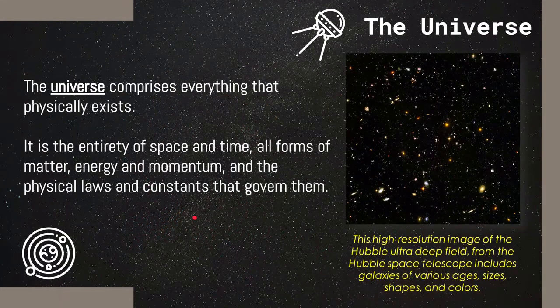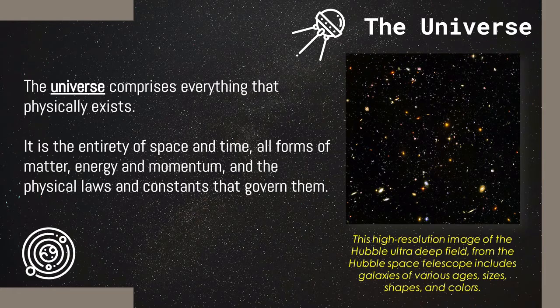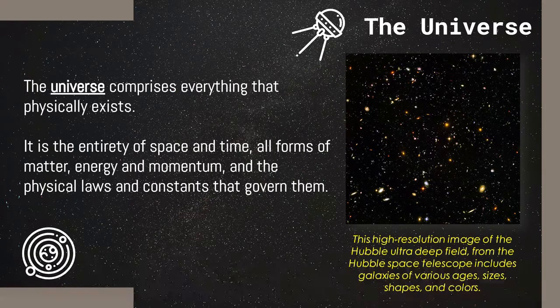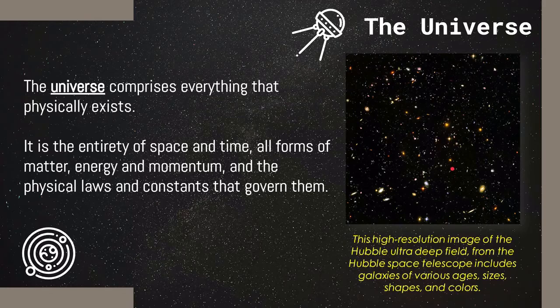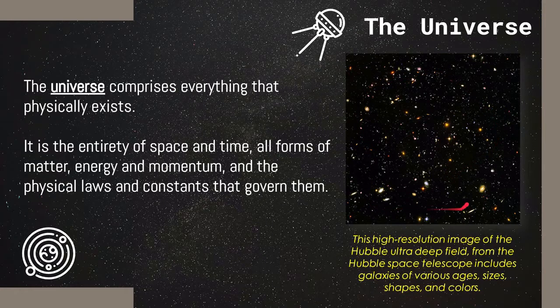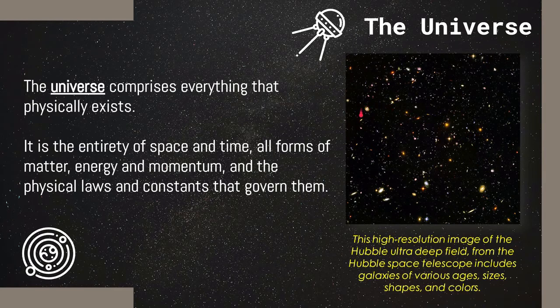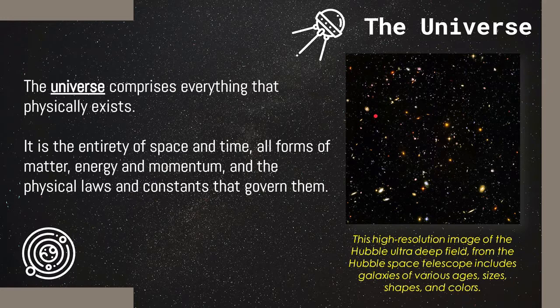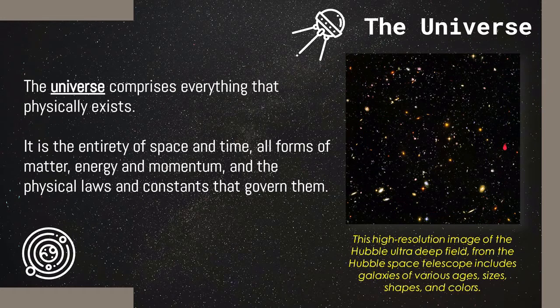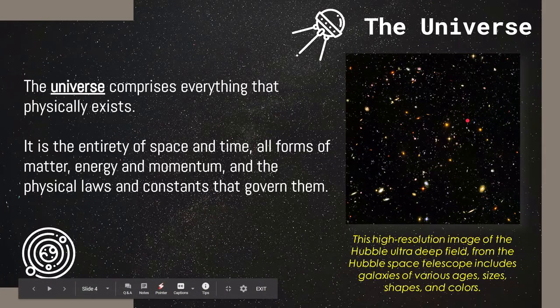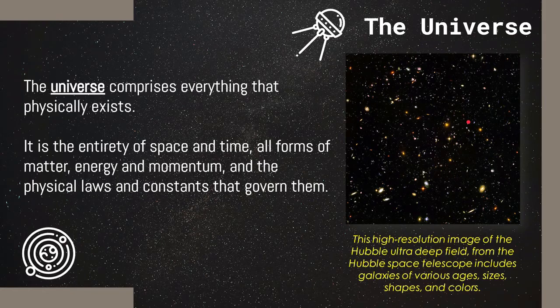The universe comprises everything that physically exists. It is the entirety of space and time, all forms of matter, energy and momentum, and the physical laws and constants that govern them. This is a high-resolution image taken from the Hubble Space Telescope that shows us all these galaxies in different ages, sizes, shapes, and colors. We all know that galaxies are made up of millions and billions of stars, but in this image, you can see they're so small and there's so many. This shows us how big the observable universe actually is.